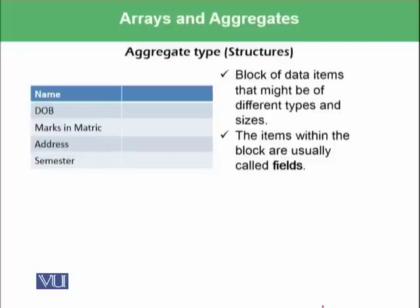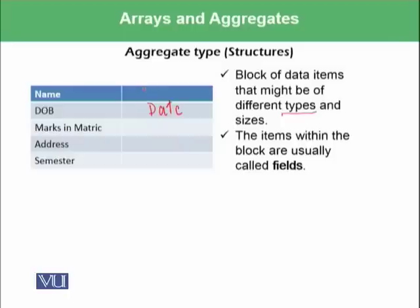As far as arrays are concerned, they should be of the same type. However, there is another type known as aggregate, which stores a variety of data items that might be of different types. For example, for a student record: date of birth is of type date, name is a string or character array, marks in metric could be numeric, and address could be a string.